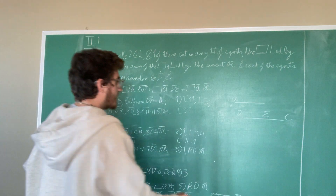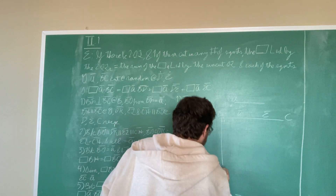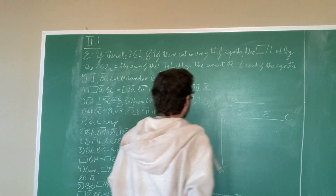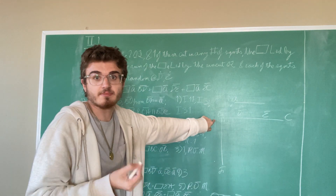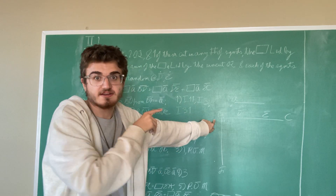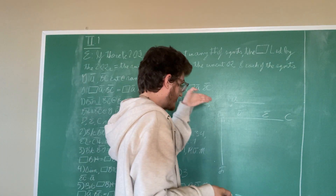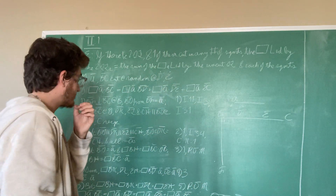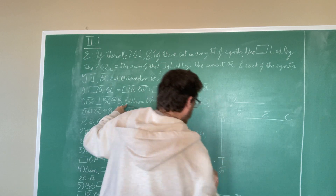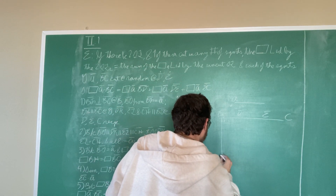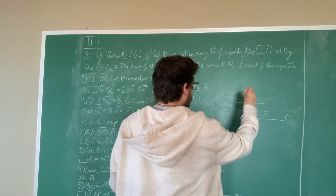Step one will begin with constructing the rectangles. We will start by drawing BF at right angles to BC from point B. We do this using Proposition I.11, because we're drawing a straight line perpendicular to a given straight line from a point on it. So we've drawn BF perpendicular to BC. Now we will cut off from BF a segment BG such that BG is equal to A.